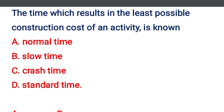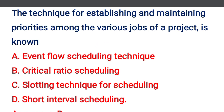Next question: the time which results in the least possible construction cost of an activity is known as — option A: normal time, option B: slow time, option C: crash time, option D: standard time. The correct answer is option B: slow time.